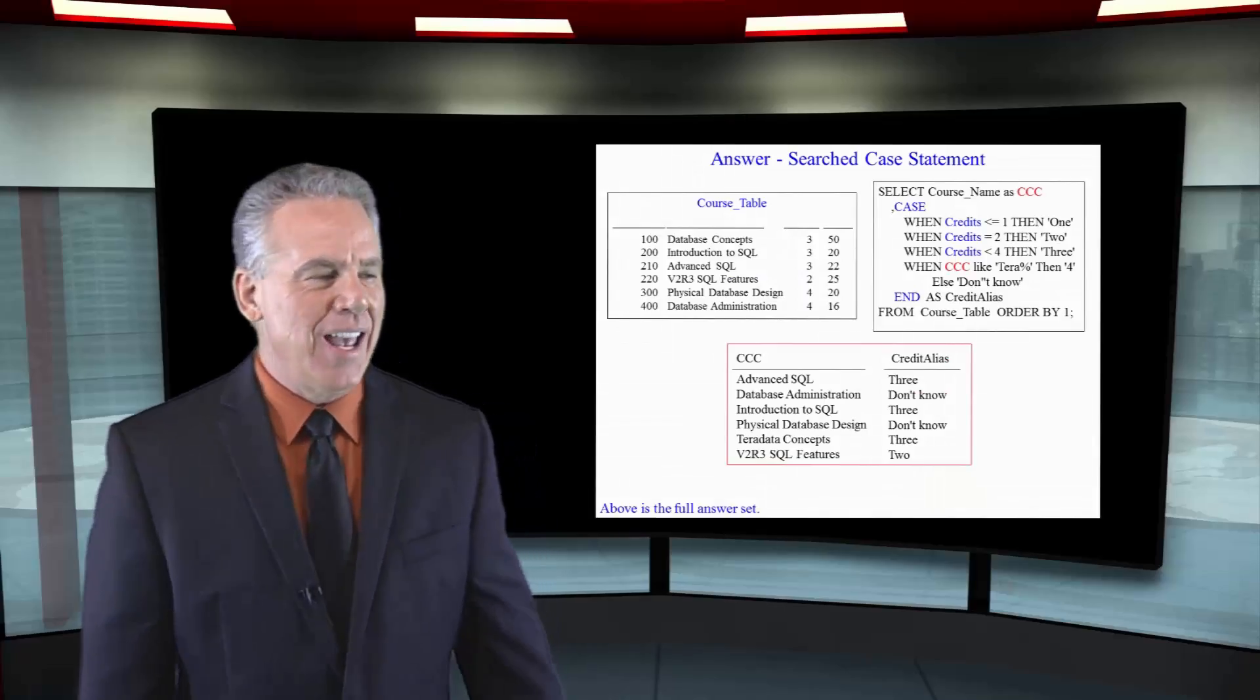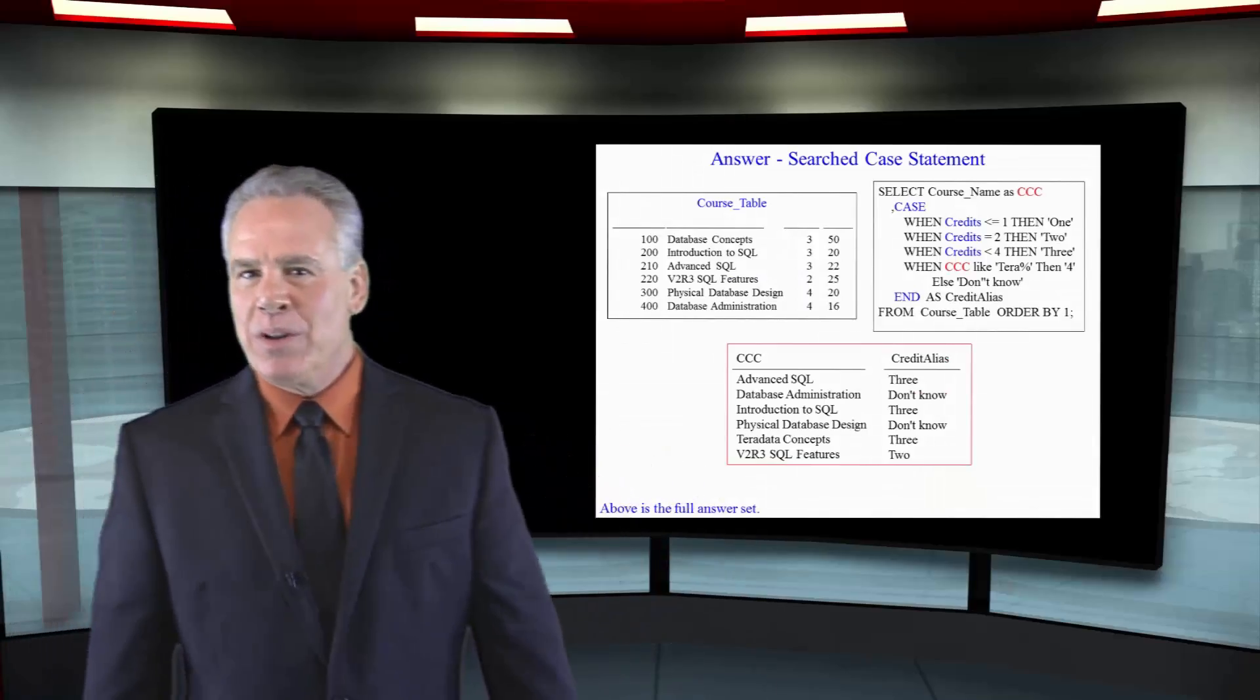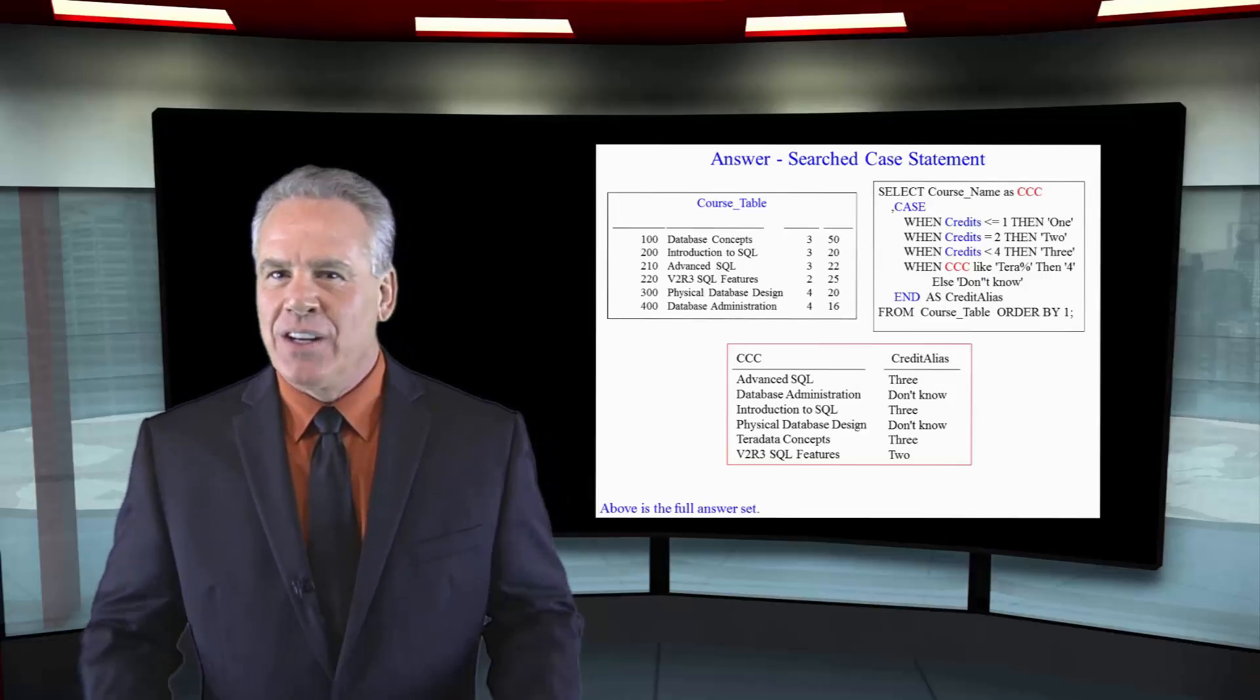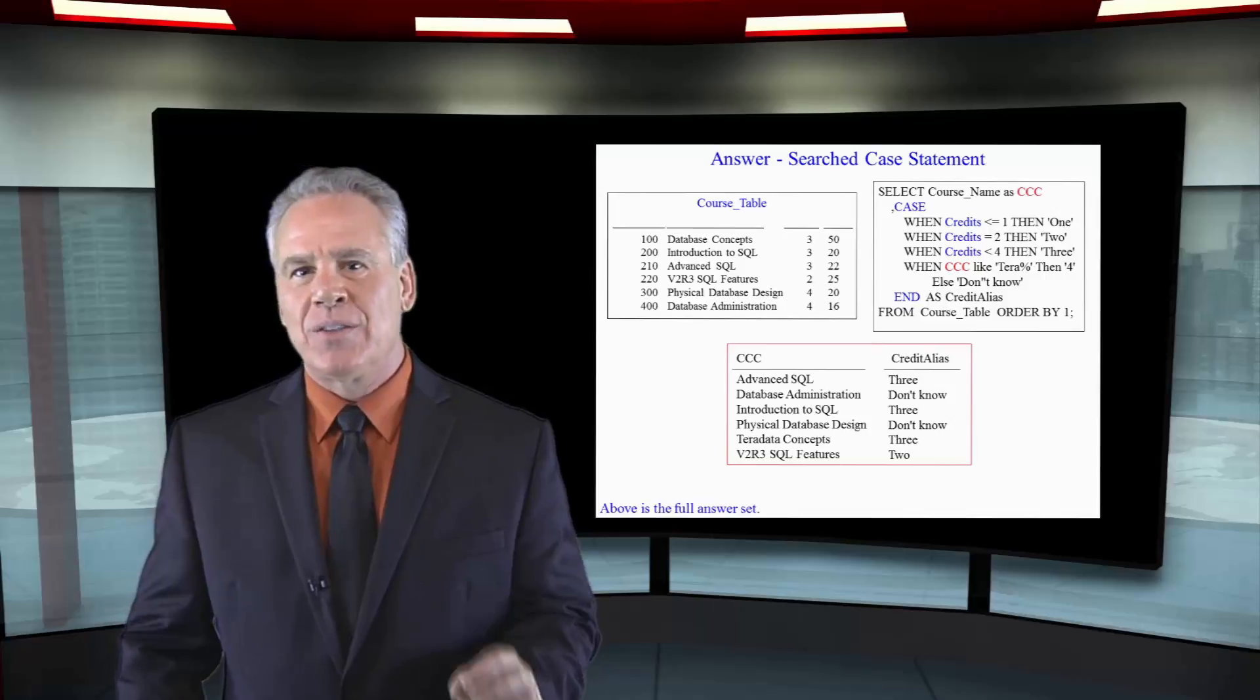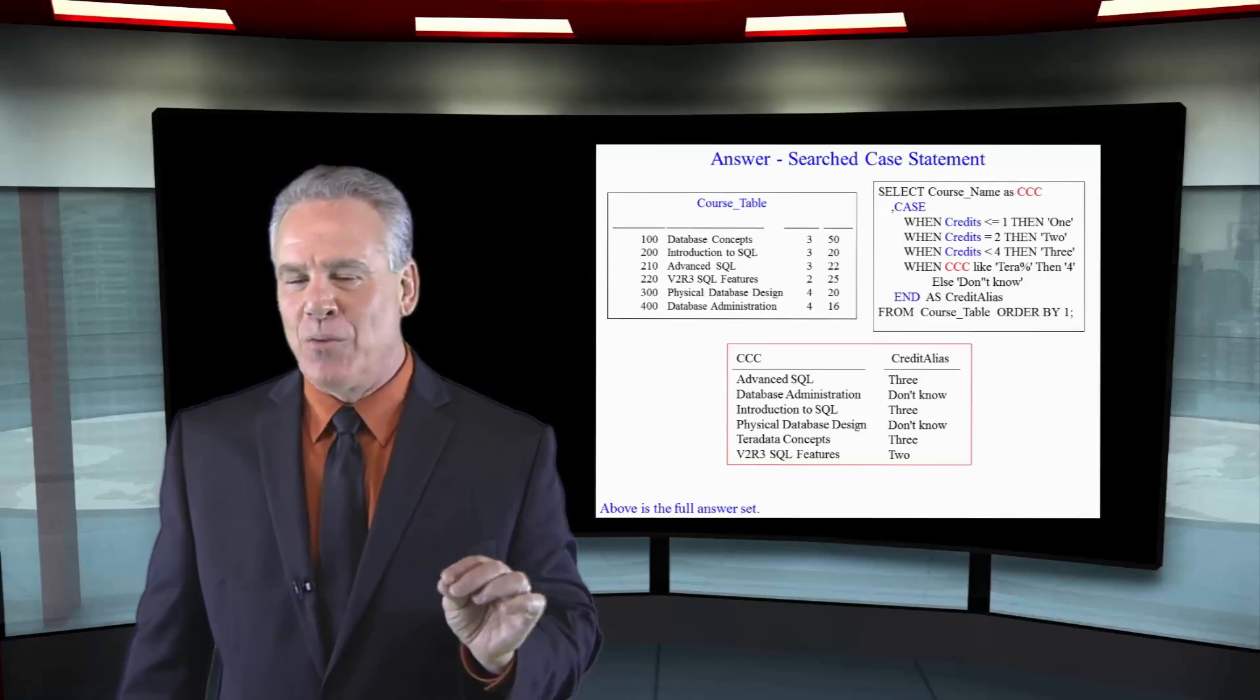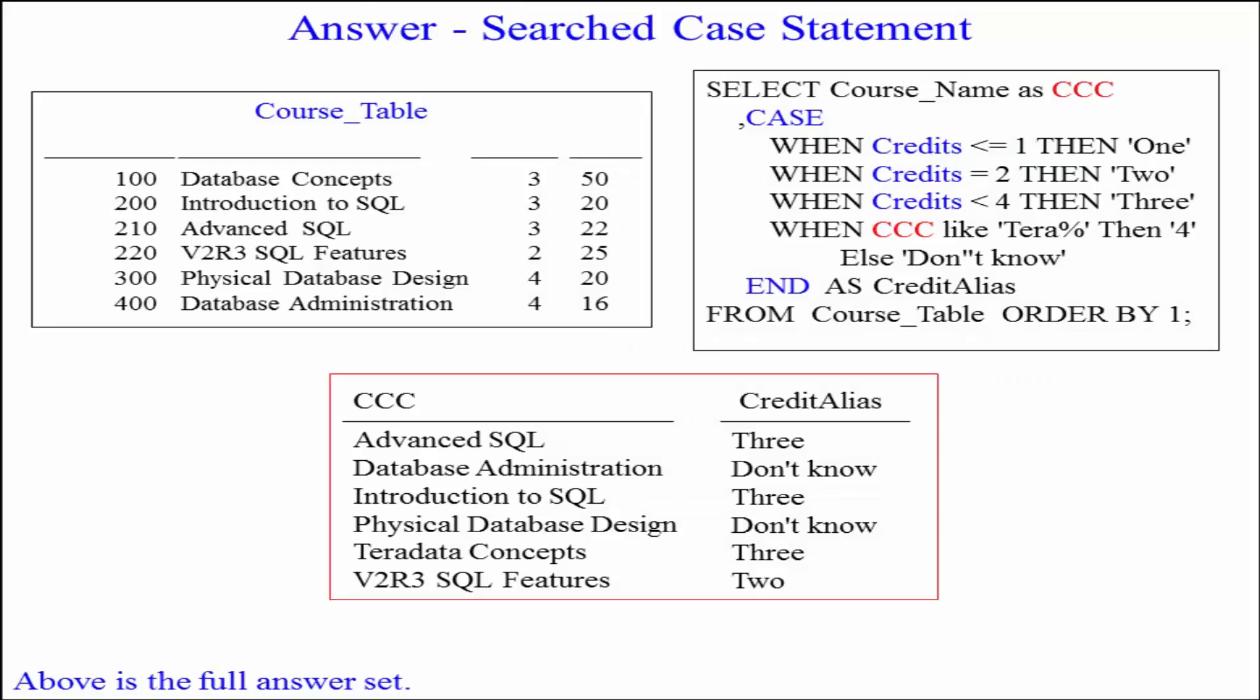Nice work. As you can see down here in the answer set, it was pretty much the same as the last one because this query is very similar to the last one. But this was a searched case. It wasn't a valued case. We didn't commit to credits. We said case when credits less than or equal to 1, when credits equal to, when credits less than 4.